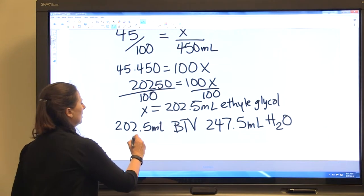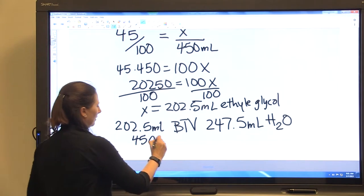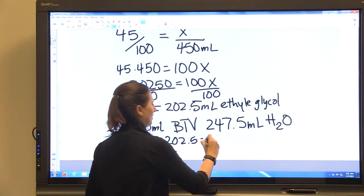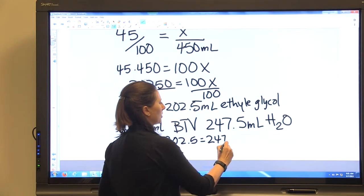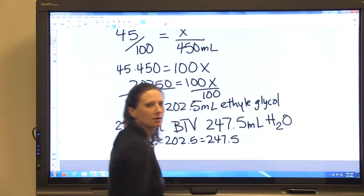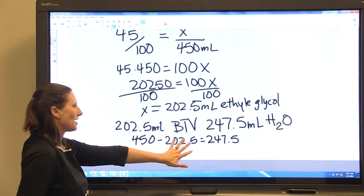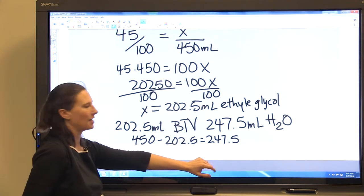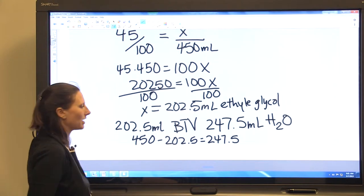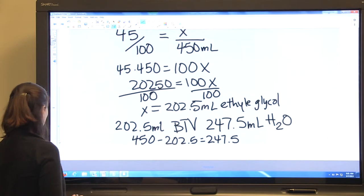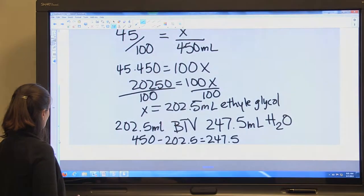You'll need to bring it to volume using 247.5 mLs of water and the way that we got that is 450 minus 202.5 leaves us with 247.5. So together this 202.5 mLs of ethylene glycol and the 247.5 mLs of water will give you your 450 mLs of a 45% ethylene glycol solution.